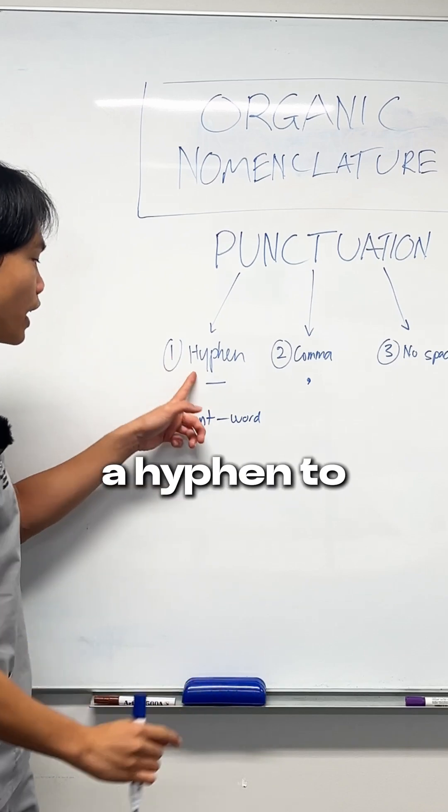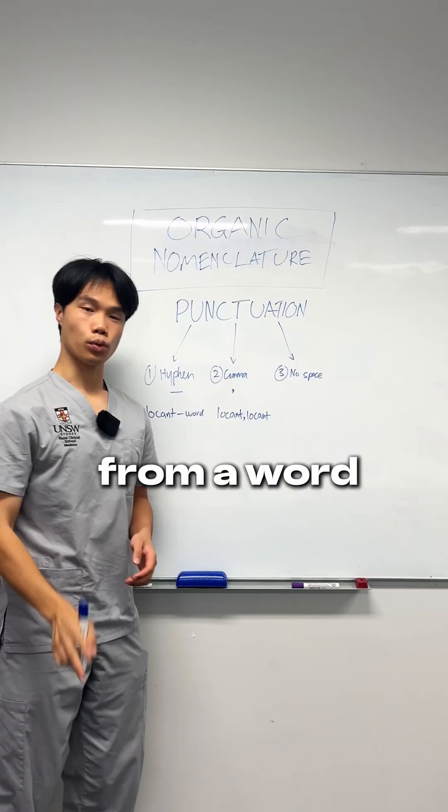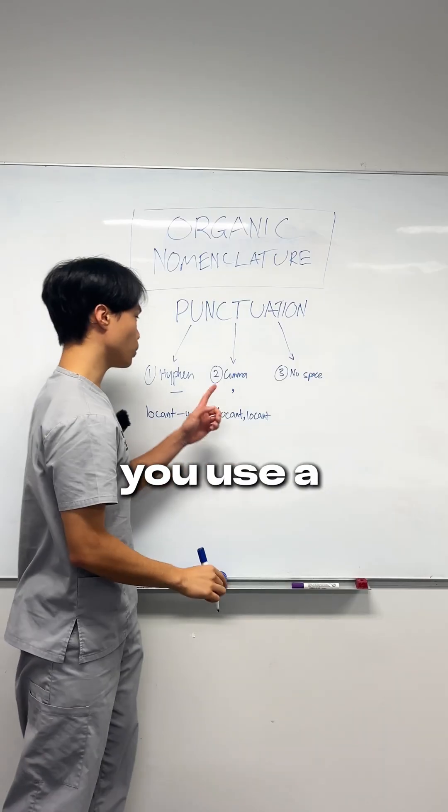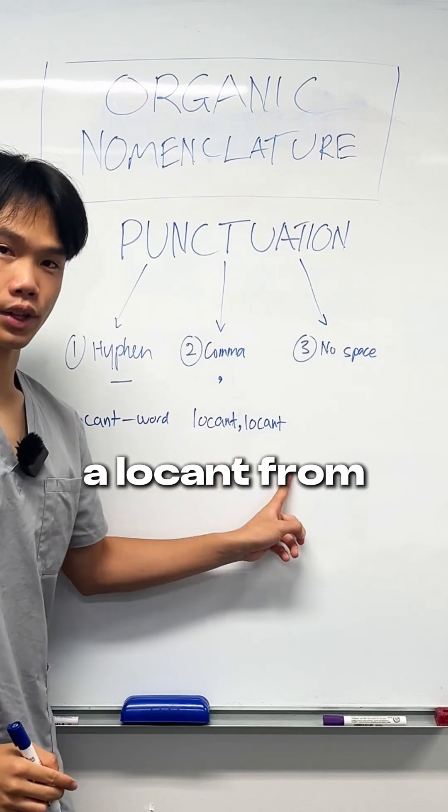Rule number one: you use a hyphen to separate a locant from a word. Rule number two: you use a comma to separate a locant from other locants.